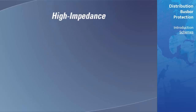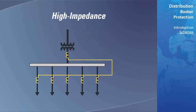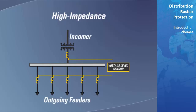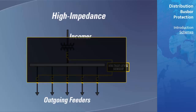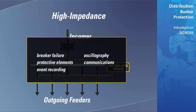The high impedance scheme requires only a simple voltage level sensor. From this perspective, the high impedance protection scheme is not a relay. If breaker failure protective elements, event recording, oscillography, communications, and other benefits of microprocessor-based relaying are of interest, then extra equipment is required, such as a digital fault recorder or dedicated breaker failure relays.